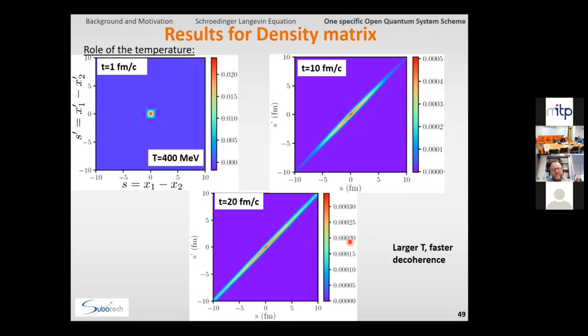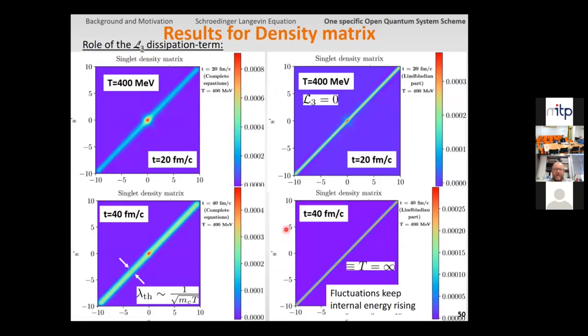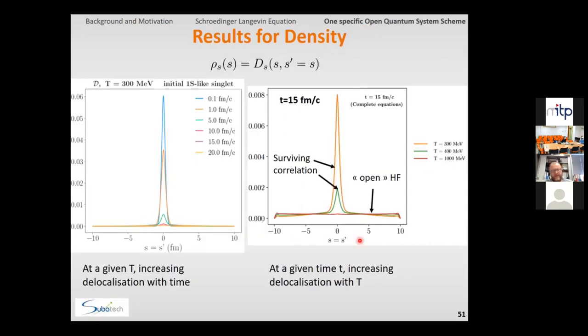So, if we work at slightly higher temperature, then naturally the decoherence happens faster. We can also investigate the role of the dissipation term. If we simply set this dissipative term to zero, then what we observe here is really a contraction along the main diagonal, which can be explained by the fact that you just heat the system with fluctuation, you never dissipate any energy, then of course you reach here infinite internal temperature, and here this width, that is the de Broglie thermal length, becomes strictly zero, so we recover the expected properties.